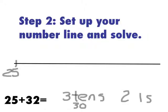So what I'm going to do first is I'm going to start by adding my tens. So how many tens do I have? Three. So I'm going to start by adding one set of 10. So 25 plus 10 gets me to 35. So that's one ten gone.